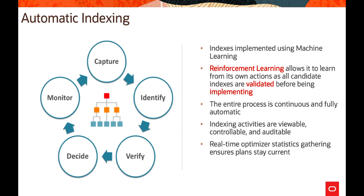In the verification step, the optimizer is asked if index candidates will be used for the captured SQL statements. SQL is run to validate that indexes improve performance. All verification is done outside of the application workflow. Then in the decide step: if performance is better for all statements, indexes are marked as visible; if performance is worse for all statements, the index remains invisible. If performance is worse for only some SQLs, indexes are marked visible except for the SQL statements that regressed.